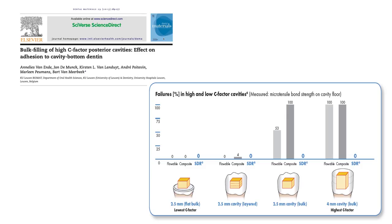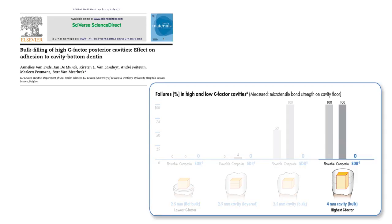In a study by Van Ende et al., 2013, they demonstrated that microtensile bond strength decreased significantly when class 1 cavities were filled in 4 mm bulk increments using conventional flowable and regular viscosity composite, resulting in a very high percentage of pre-test failures. The SDR bulk fill material was the only product that maintained its tensile bond strength against the cavity walls in all samples tested. This excellent result can be attributed to the fact that shrinkage stress against the cavity walls is only 1.4 MPa for this material.